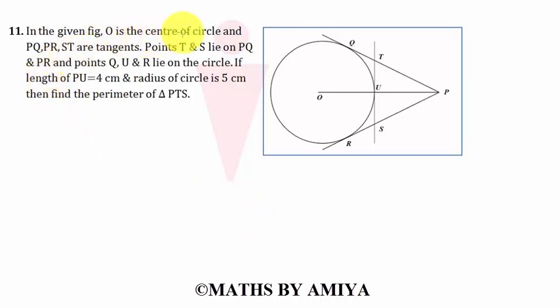In the given figure, O is the center of circle and PQ, PR, ST are the tangents. Points T and S lie on PQ and PR respectively and points Q, U and R lie on the circle. If length of PU is 4 cm, radius is 5 cm, then find the perimeter of triangle PTS.